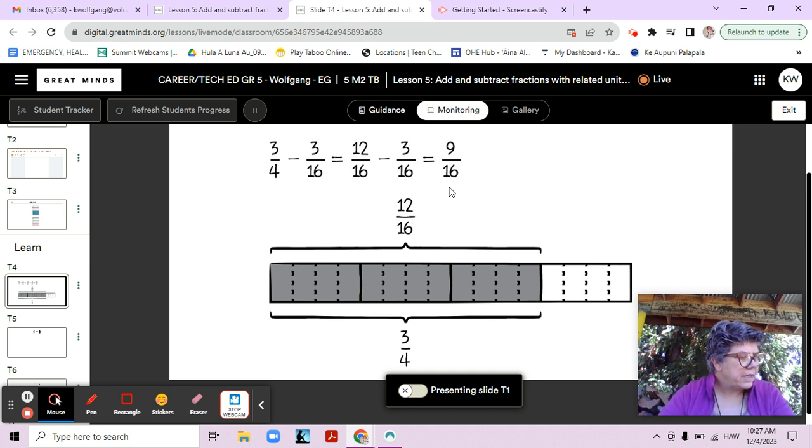You might notice that they drew the tape diagram to find equivalent fractions between the three-fourths and the 12 sixteenths. Do you see how three-fourths and 12 sixteenths are equal to each other? They're both this amount on our tape diagram. One is broken into 16 parts and one is broken into four parts. You might notice that they renamed the three-fourths as 12 sixteenths, but they kept the three-sixteenths the same. Three-sixteenths didn't change, right?